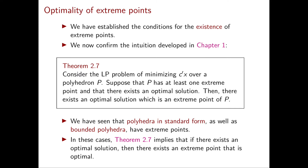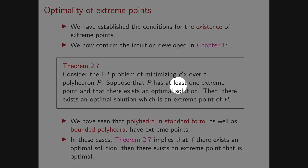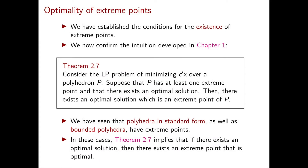My second comment is about some direct consequences of this theorem. In this theorem, we are asking that P has at least one extreme point. We've already seen in the previous video some classes of polyhedra that do have extreme points — namely, polyhedra in standard form and polytopes, as long as they're non-empty. So in these cases, Theorem 2.7 implies that if there exists an optimal solution, then there exists an extreme point that is an optimal solution.